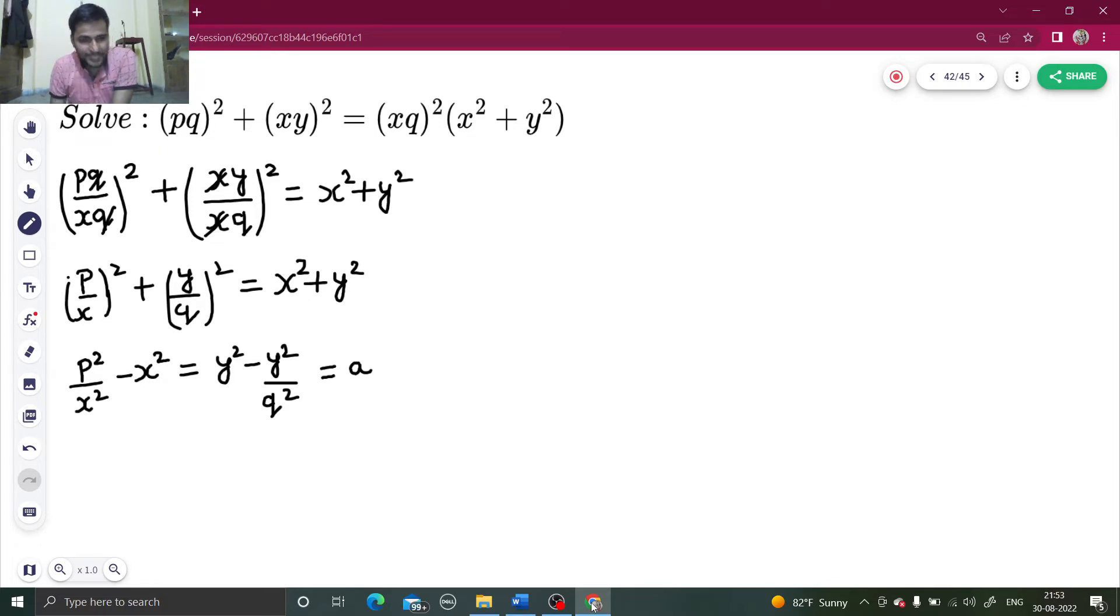Now from the first, I will try to find the value of P in terms of X. So instead of P squared minus X to the power 4, I can do P squared by X squared equals A plus X squared. And further, P squared equals A X squared plus X to the power 4.